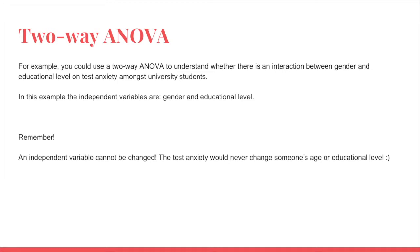And I just want to remind you guys that independent variables cannot be changed. So the test anxiety here will never change someone's gender or educational level. That means the test anxiety is the dependent variable, and the gender and educational level are the independent variables. And from two-way ANOVA, we can see whether there is an interaction between the gender and educational level itself.